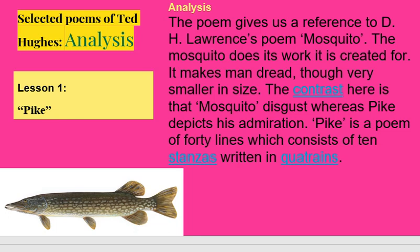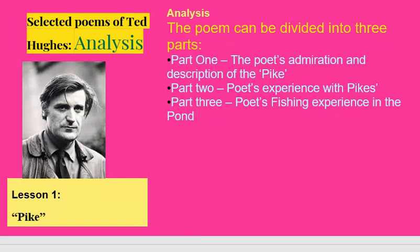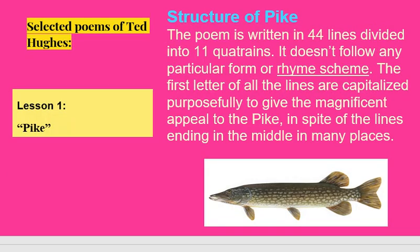Pike is a poem of forty lines consisting of ten stanzas written in quatrains. The poem can be divided into three parts: Part one — the poet's admiration and description of the pike; Part two — the poet's experience with pikes; Part three — the poet's fishing experience in the pond. The poem is written in forty-four lines divided into eleven quatrains. It doesn't follow any particular rhyme scheme, and the first letter of all lines is capitalized purposefully to give a magnificent appeal to the pike.